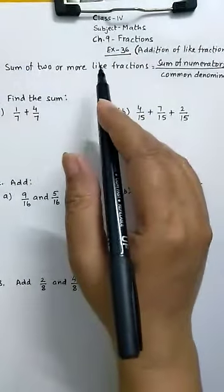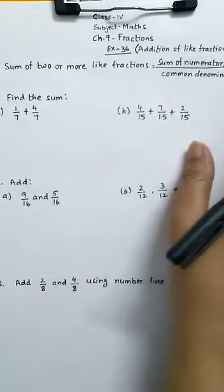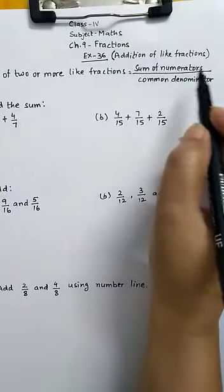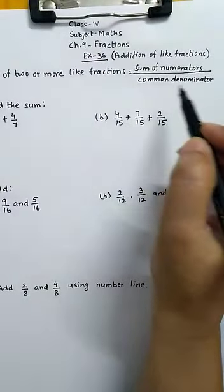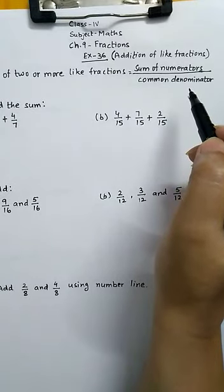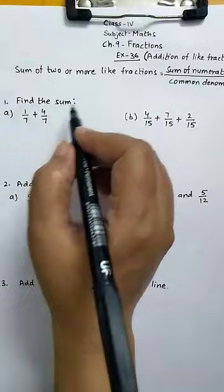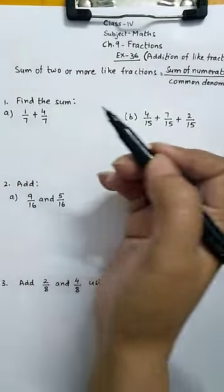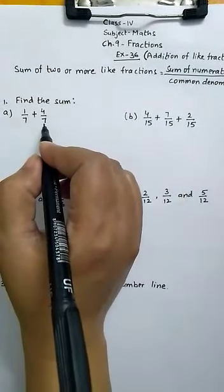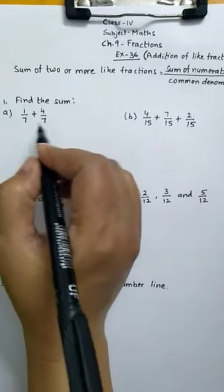When we add two or more like fractions, that is equal to sum of the numerators upon common denominator. Let us see how. In our first question, we have to find out the sum of 1 by 7 and 4 by 7. As denominators are same, therefore these are like fractions.